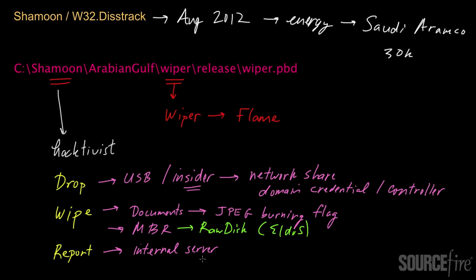Normally in a botnet attack, the command and control server is hosted externally, and internal machines contact that external host. In this case, the command and control server was hosted internally rather than externally, which is not common. This adds more weight to the argument that the Shamoon threat was perpetrated by insiders, because the server used was an internal server easily accessible to an insider but not to someone on the outside.